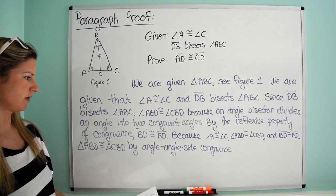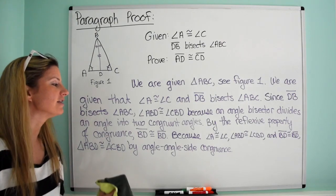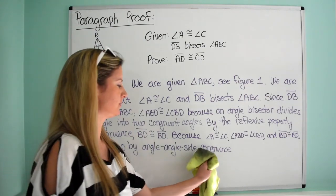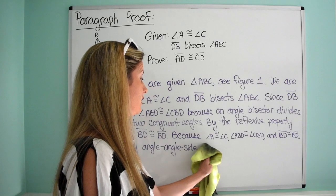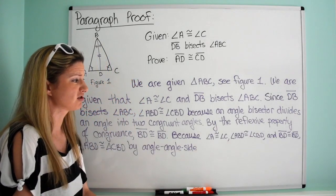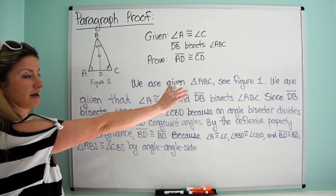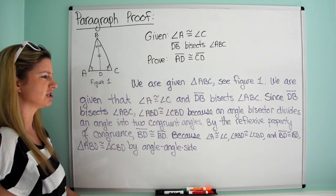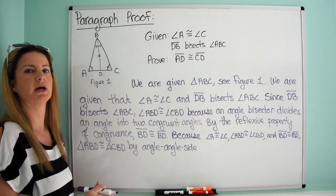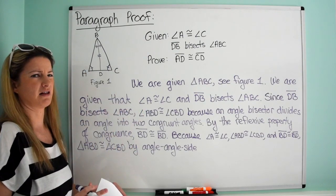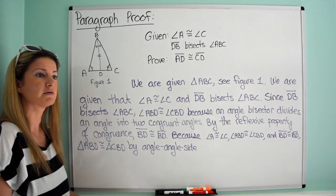We should write 'angle-angle-side triangle congruence.' Remember to check with your teacher about how specific they'll be, because some teachers will require 'triangle congruence' explicitly, and some may not make you write the whole thing out since you've already listed everything above. With two-column proofs there's a clear standard, but with paragraph proofs there's a lot more leeway — which is actually why many teachers stick to two-column proofs.